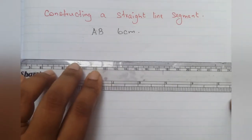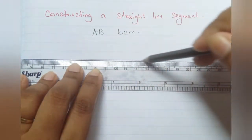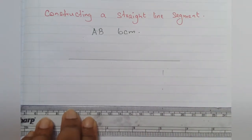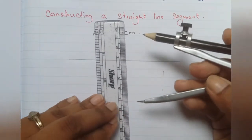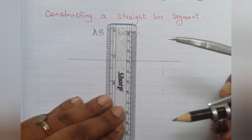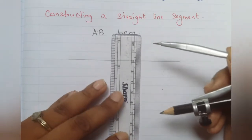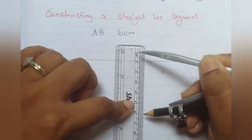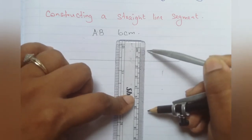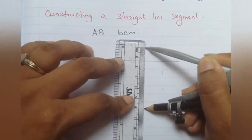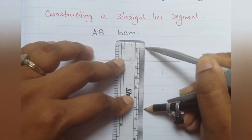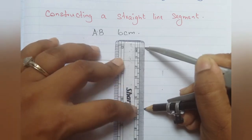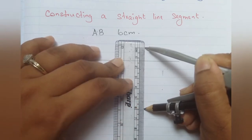First, draw a random straight line without measuring. After that we are going to measure 6 centimeters using the compass and ruler. Place the pointed part of the compass on zero level and measure 6 centimeters with the pencil. As you can see, I am measuring the 6 centimeter length now.